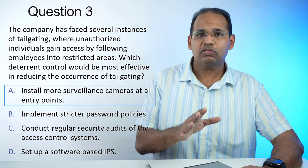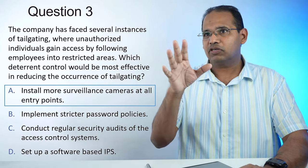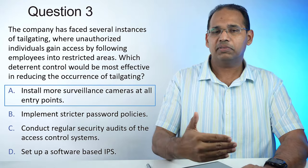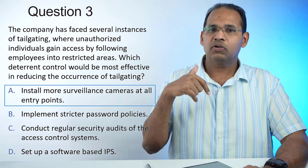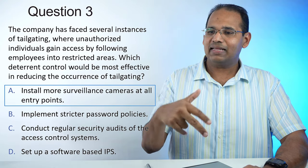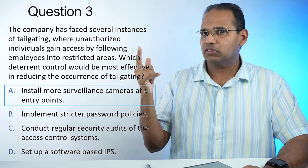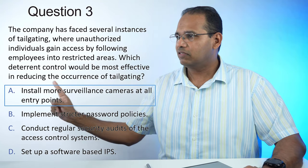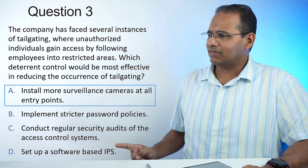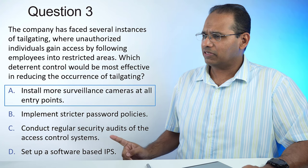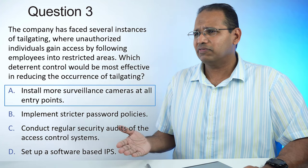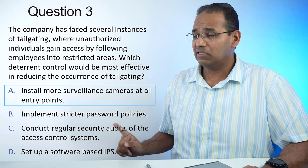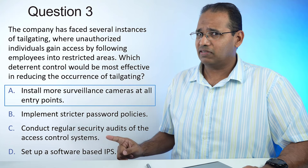Conducting regular security audits of the access control system is okay, but a bad person probably wouldn't even know they're doing that, so it probably wouldn't scare them off. Cameras work as a deterrent because the bad actor can see them and be discouraged.